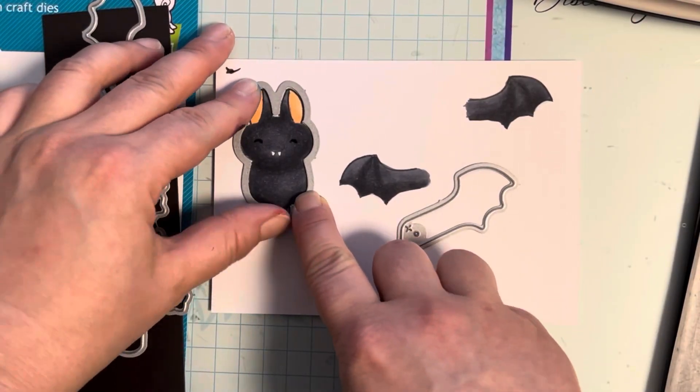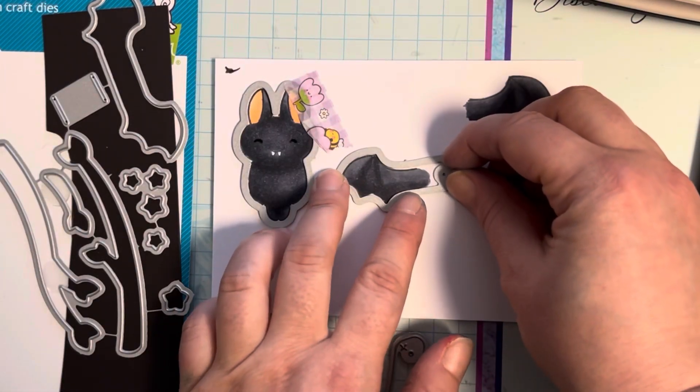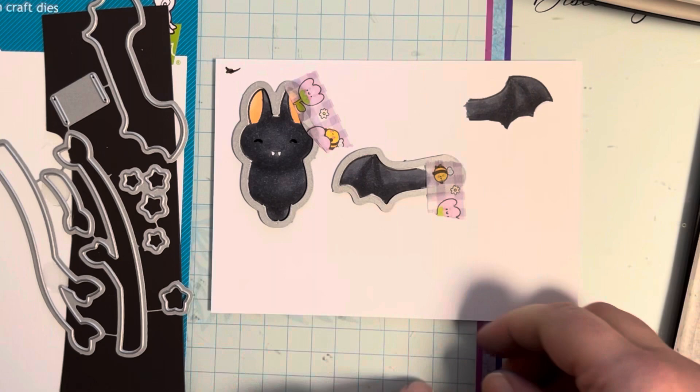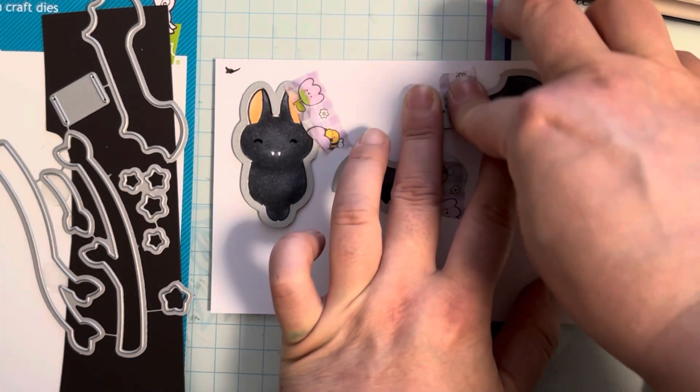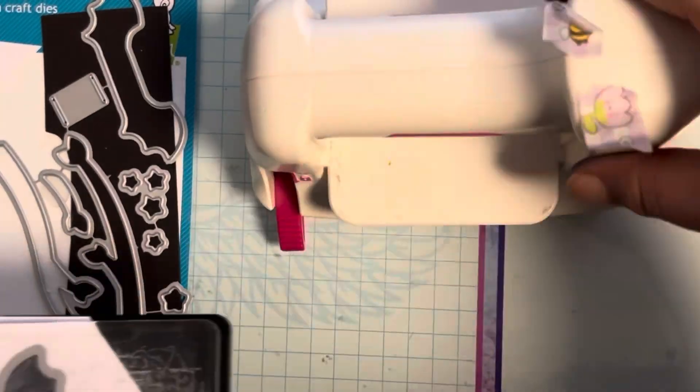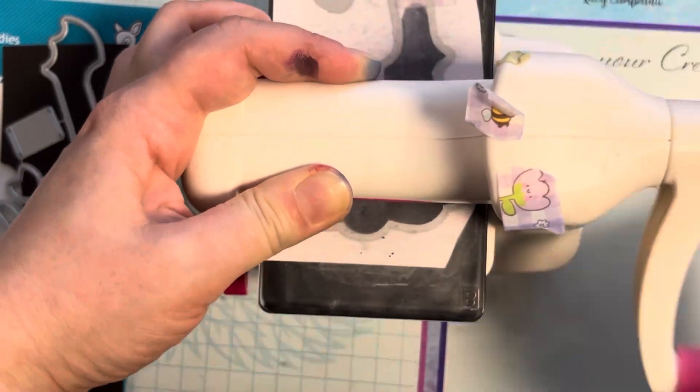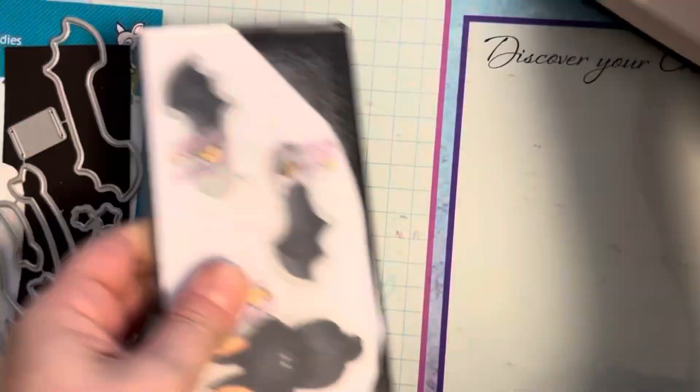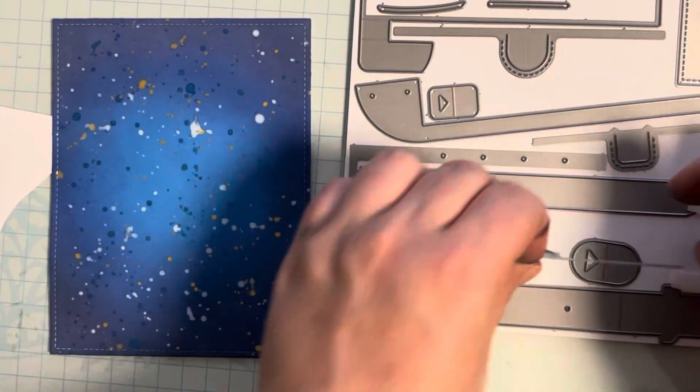Here I have the die cuts. I took those because of the wings you need for the waving pull tab. I just line those up, then I cut my paper a bit and put them through my small die cut machine, which I love for just small things. Then I put those aside.